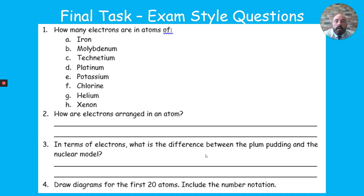For the final task, there are some exam-style questions. The lower-level recall question involves finding an element in the periodic table and using the bottom number to find the electron count. The second question is more difficult, asking about electron arrangements in shells. There's also some interleaving on the plum pudding and nuclear models in terms of electrons, and finally drawing the first 20 atoms. This will take about 20 minutes — pause now and press play when ready.